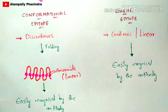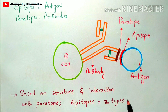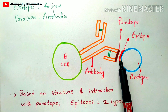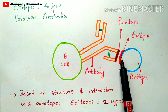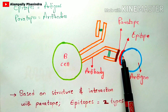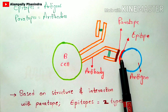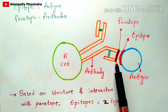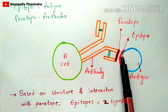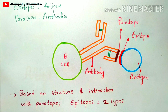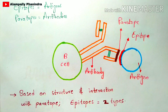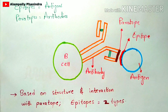As shown in the diagram, the red-colored region is the epitope. In the case of a conformational epitope, it cannot be directly recognized by the antibody, but if the epitope is a linear epitope, it can be easily recognized by the antibody because the amino acids are already in linear form.